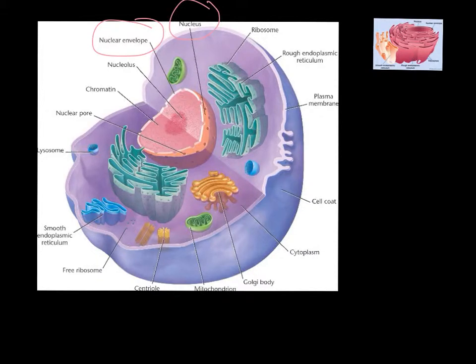The nucleus is the brain or the control center of the cell because it contains the genetic material, which are in the shape of chromosomes, in other words our DNA or genes. The chromosomes are located on the inside of the nucleus.